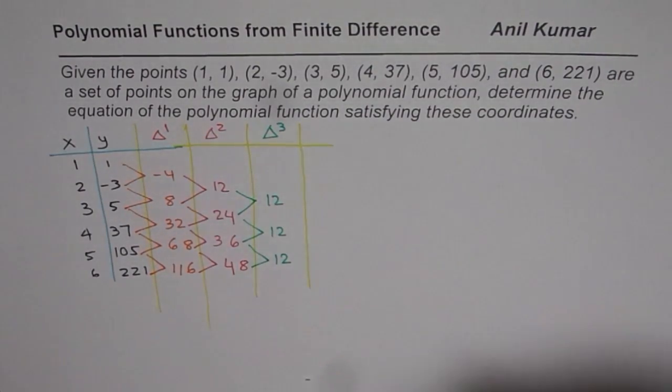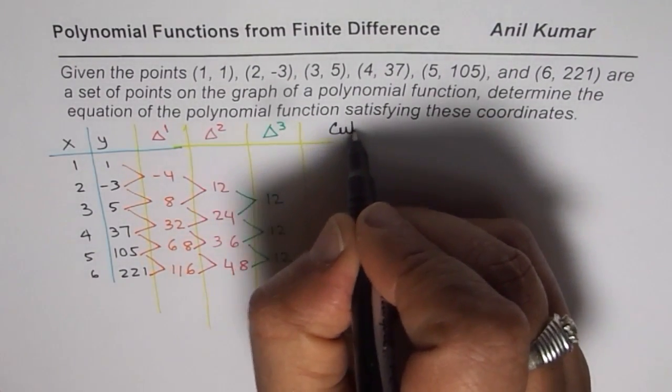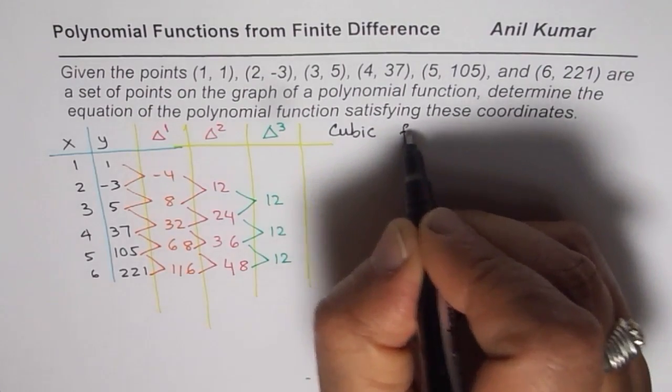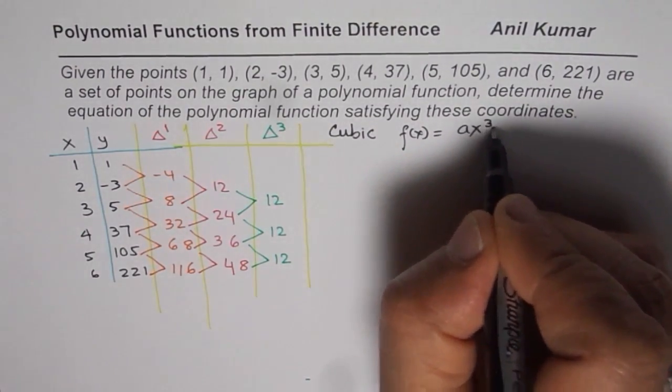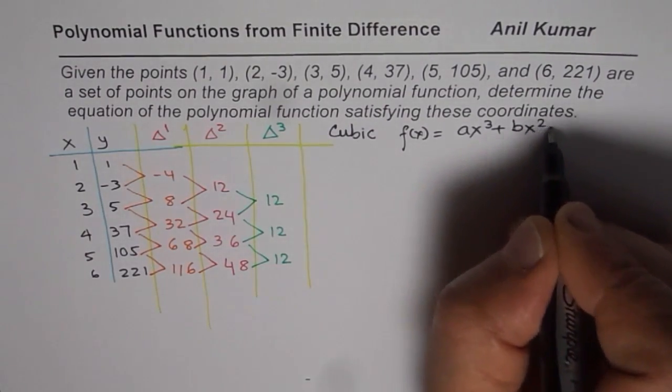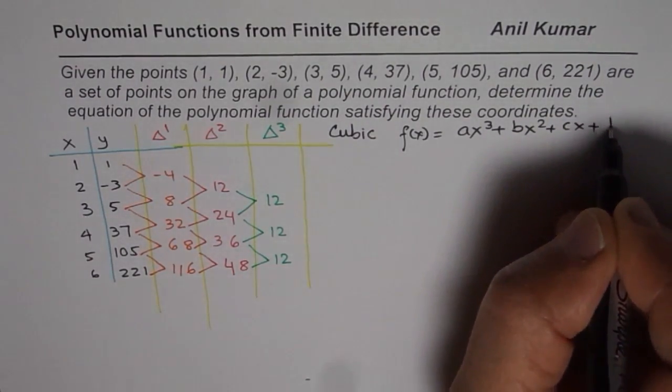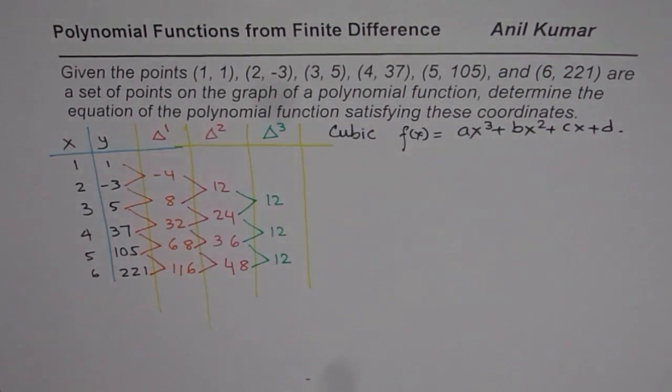And that clearly indicates that the function is cubic. So we have a cubic function. So we could write our function f(x) equals ax³ + bx² + cx + d.